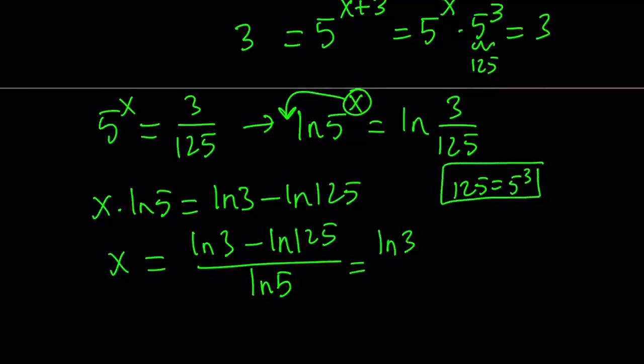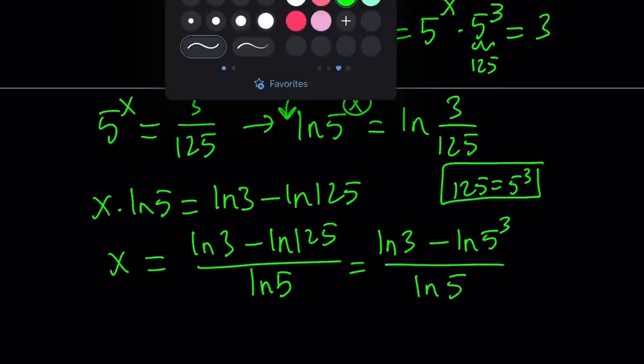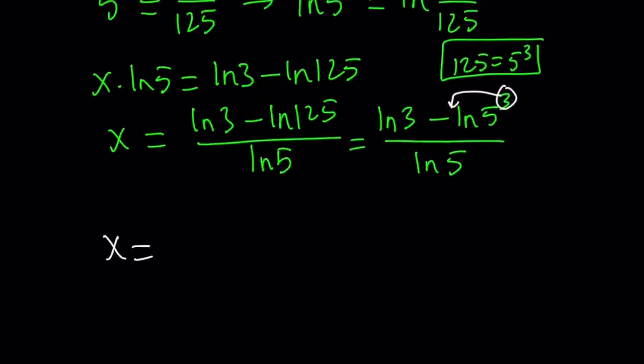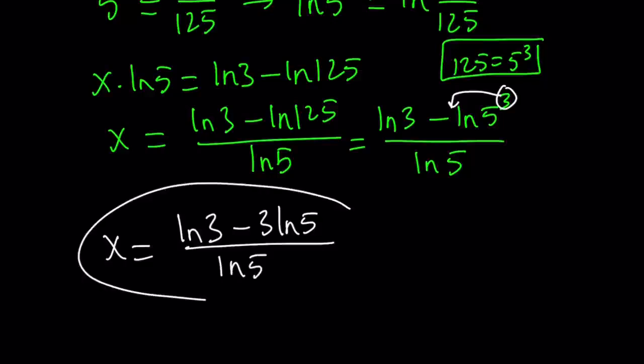And then, we can divide both sides by ln 5 to get the answer. So, the answer is going to be ln 3 minus ln 125 all over ln 5. So, we can simplify this a little bit, like 125 is 5 to the third power. Using the cube, we can kind of simplify a little bit. Kind of write this like ln 3 minus ln 5 cubed. And then, using the power property, we can actually move this 3 to the front. And that's going to become 3 times ln 5.